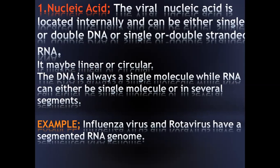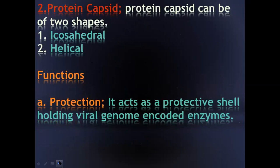The second component of the viral structure is the protein capsid, which is present mostly in two shapes. The first is the icosahedral shape, which is like a hexagonal structure holding the viral genome and protecting it from the host cells. The second shape of the protein capsid may be helical.